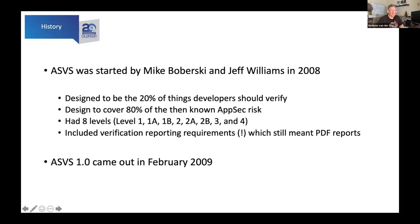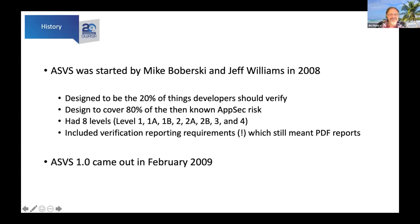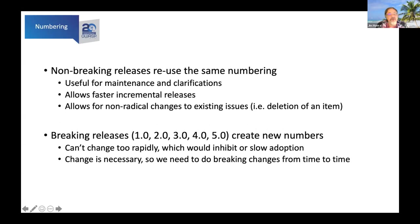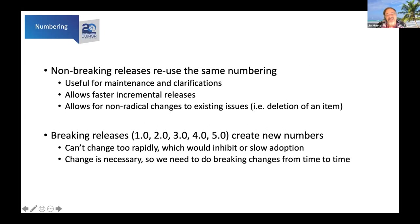Almost every single item that Mike, Jeff, and Dave put in there is still in there. The first version only had 120 or so controls in total, even though it had eight levels, but almost all of them are still there. Jeff was doing appsec before the industry was even named appsec, same with Boberski — they are some of the real early pioneers in our industry and their work still helps us today.